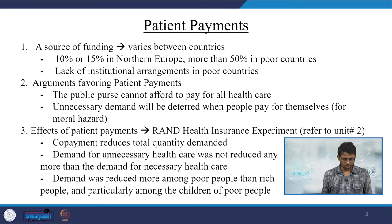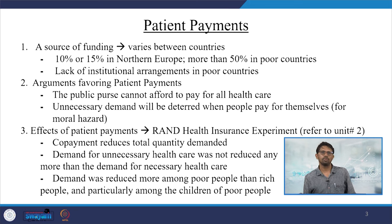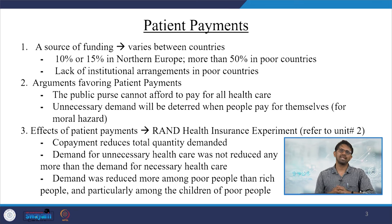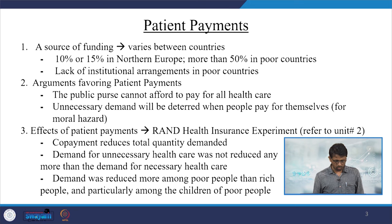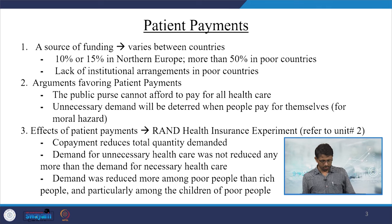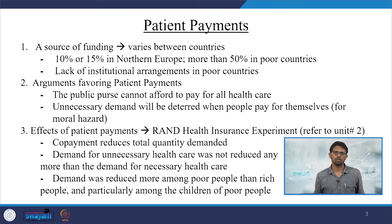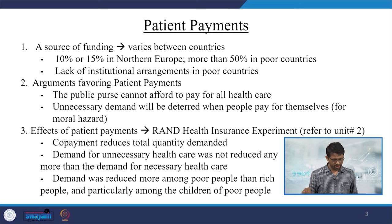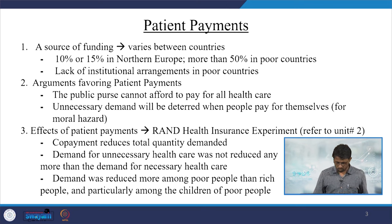The third aspect of patient payments is their effects. The RAND health insurance experiment — discussed in unit 2 on demand in healthcare — found that co-payment reduces total quantity demanded. Demand for unnecessary healthcare was not reduced any more than demand for necessary healthcare, and demand was reduced more among poor people than rich people, particularly among the children of poor people.